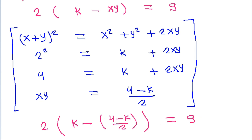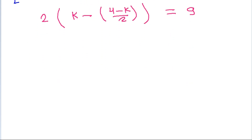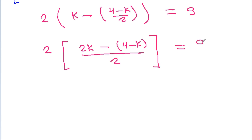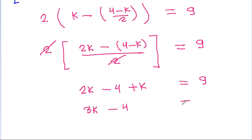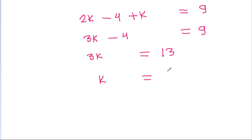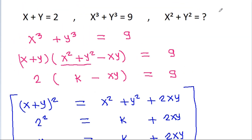So it is 2 times k minus xy, which is 4 minus k by 2, that is equal to 9. And it is 2 times 2k minus 4 minus k by 2 is equal to 9, and 2 will get cancelled. And it is 2k minus 4 plus k is equal to 9. And 2k plus k will be 3k minus 4 is equal to 9, so 3k is equal to 13. And k will be equal to 13 by 3. And k is equal to x square plus y square, that is 13 by 3.